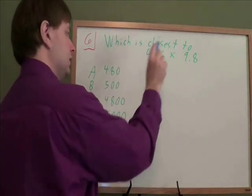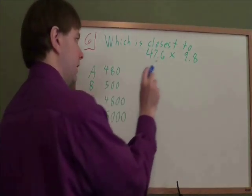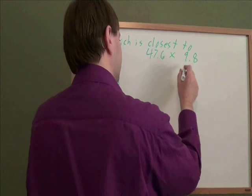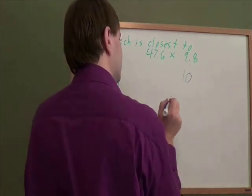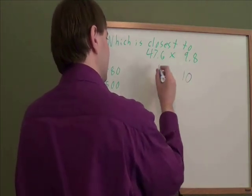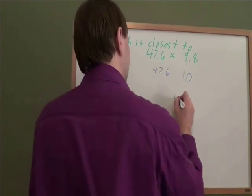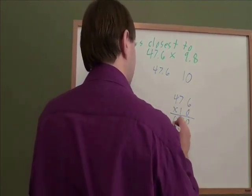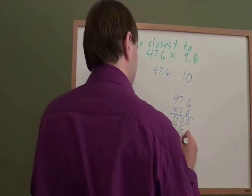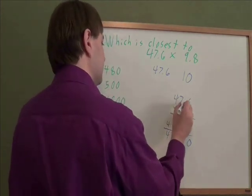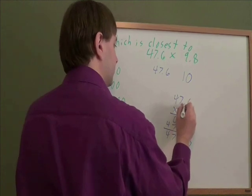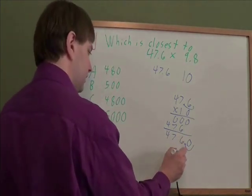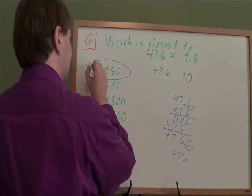When this problem says which is closest, that's a hint that you're allowed to round. So let's round 9.8. 9.8, because that 8 is a big number, it's 5 or bigger, that means we'll round up to the next whole number, which after 9 comes 10. 9.8 is pretty close to 10. And 10 is a really convenient number to multiply by. So we can just keep this one how it is, and the multiplying will still go very quickly. 0 times anything is 0. 1 times anything is the anything. Adding is pretty quick. And then how many decimal places did this multiplication start with? It had 1. So we need 1 to replace at the end. And this is approximately 476. So 476 is closest to 480. And that is our answer.